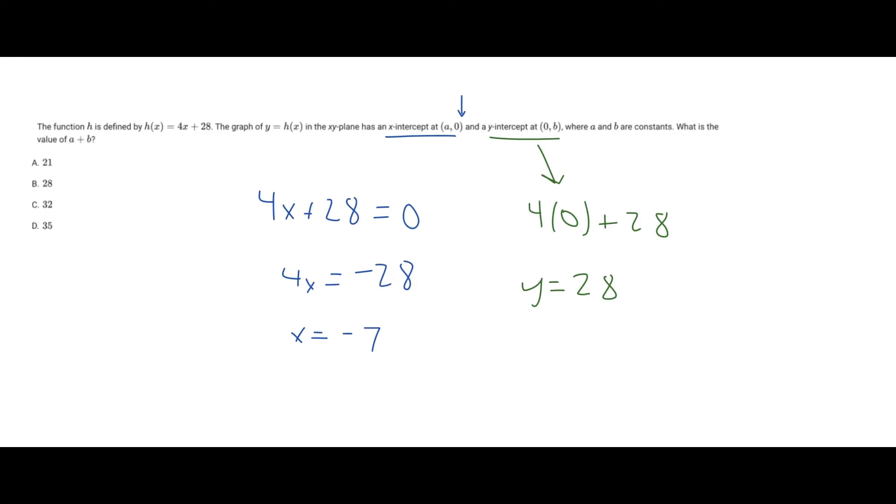And so now the question says, what is the value of a + b? The value over here, -7, is our a value, and then positive 28 is our b value.